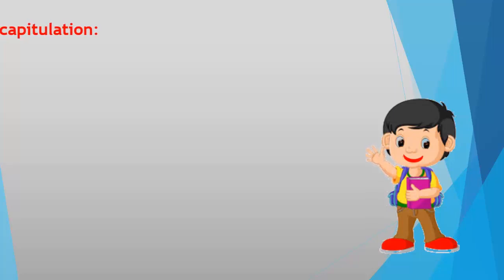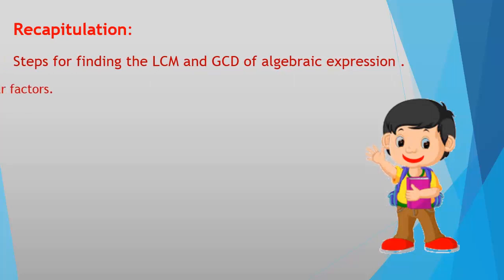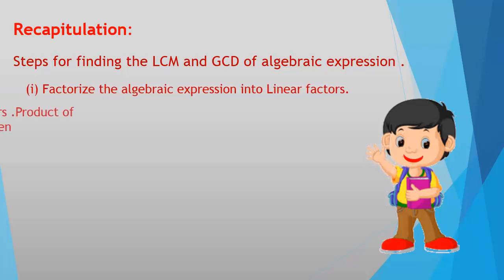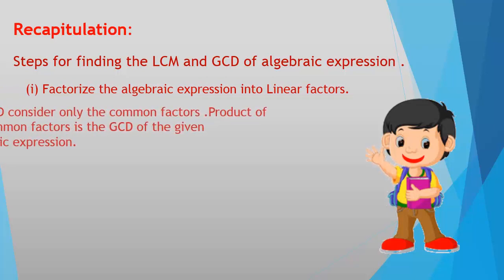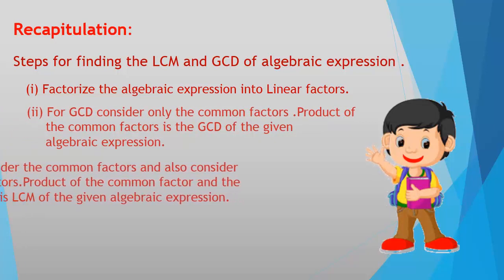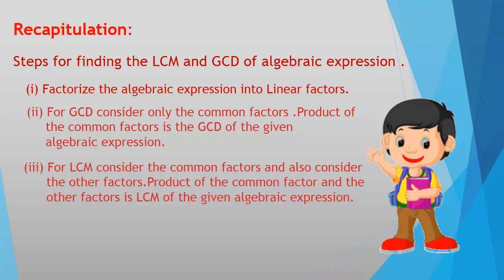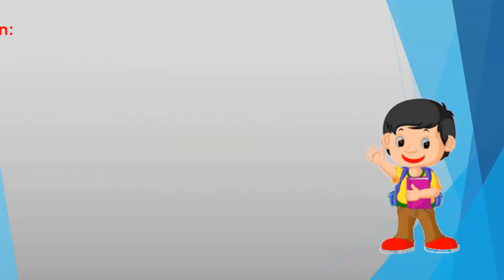Recapitulation — Steps for finding the LCM and GCD of algebraic expressions: First, factorize the algebraic expression into linear factors. For GCD, consider only the common factors; the product of the common factors is the GCD. For LCM, consider the common factors and also the other factors; the product of the common and other factors is the LCM.